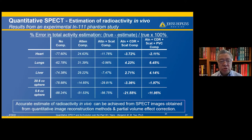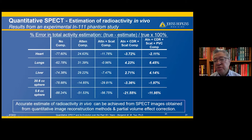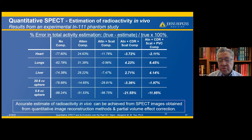This slide shows the results of the quantitative estimation, showing percent error in total activity estimation in the heart, lungs, and liver cavities, and the two different size spheres. With low compensation there was a huge percent error. With addition of attenuation compensation, scatter compensation, and partial volume compensation, the percent error is substantially reduced.